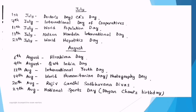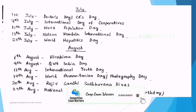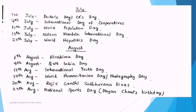July and August important dates: 1st July — Doctors Day or Chartered Accountants Day (important for commerce students). 7th July — International Day of Cooperatives. 11th July — World Population Day. 18th July — Nelson Mandela International Day. 28th July — World Hepatitis Day. August: 6th August — Hiroshima Day. 9th August — Quit India Day (Quit India Movement launched 9th August 1942). 12th August — International Youth Day. 19th August — World Humanitarian Day or World Photography Day. 20th August — Rajiv Gandhi's Sadbhavana Divas. 29th August — National Sports Day, birthday of Dhyan Chand, famous hockey player.